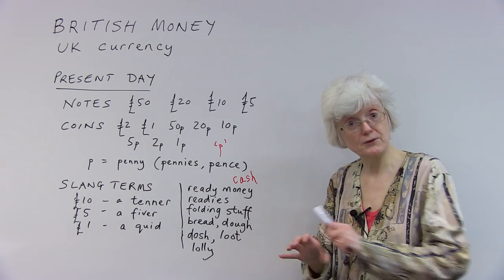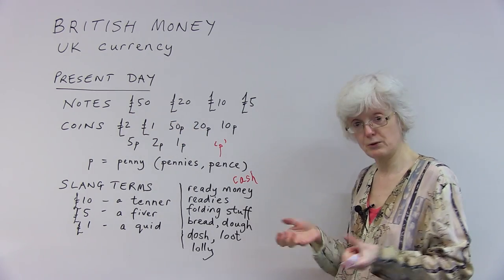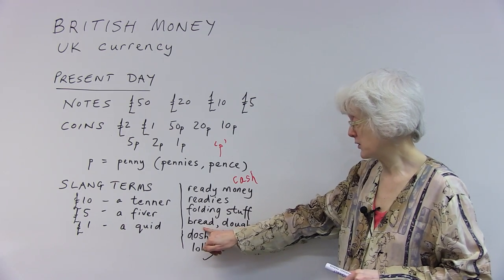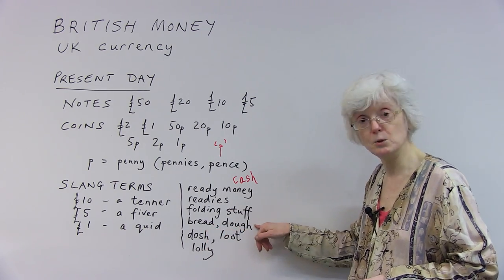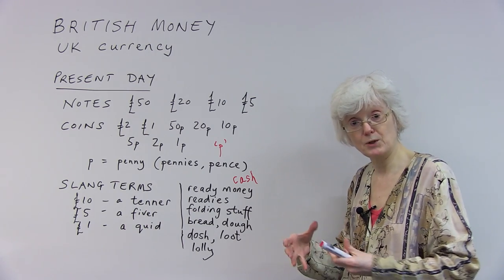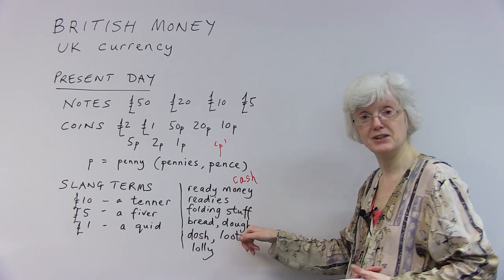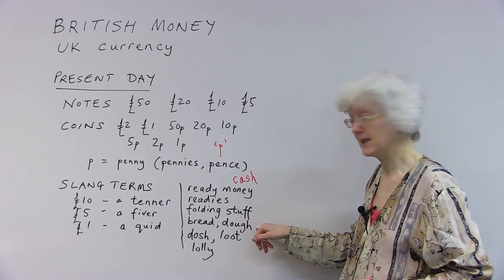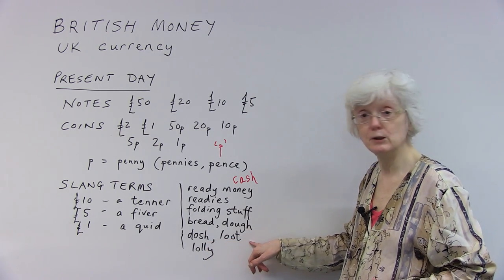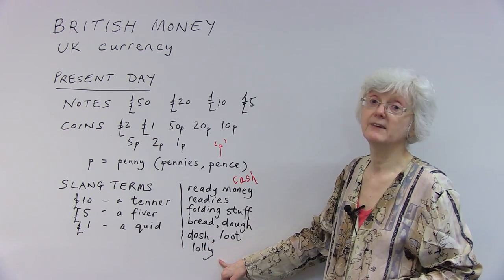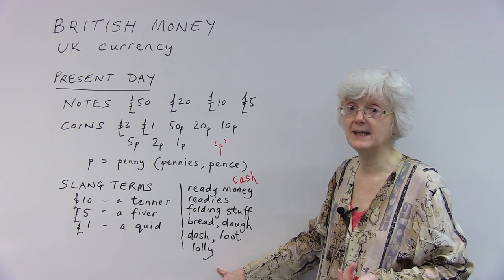Folding stuff — that's the paper notes. It folds up, so it's called the folding stuff. There are two terms to do with food: bread and dough. The dough is what you put in the oven, and the bread is what you take out — bread and dough. That's also a word for money. Dosh, loot, lolly — they're all sort of quite comical, humorous terms for money as well.